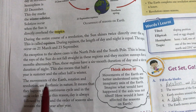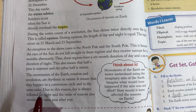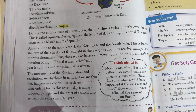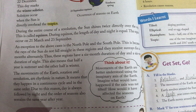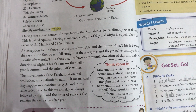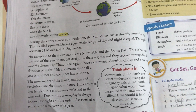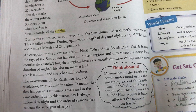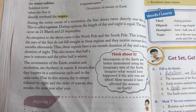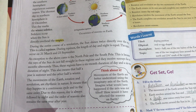The movements of the earth — rotation and revolution — are rhythmic in nature, meaning they happen in a continuous circle and in the same order. जो पृथ्वी की movement है वो एक rhythmic nature है — यह continue चलता रहता है same order में। Due to this reason, day is always followed by night and the order of seasons also remains the same year after year. Hope you all understand. This is the end of Chapter 5: The Movements of the Earth. Thank you.